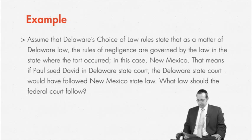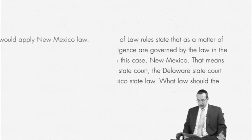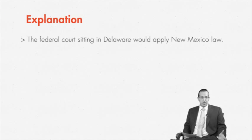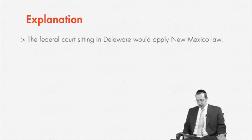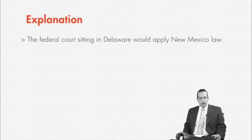By the way, that's fairly common. That means that if Paul sued David in Delaware state court, the Delaware state courts would have followed New Mexico law. So what law should the federal court follow? Should it follow Delaware state law — that is, after all, where we're sitting — or New Mexico state law? On one hand, Erie says that you apply the law of the state that we're in, which would seem to be Delaware law. On the other hand, even Delaware wouldn't have applied Delaware law — Delaware would have applied New Mexico law. So in the interest of consistency, the federal courts should apply New Mexico law. And in fact, that's the standard: the federal courts sitting in Delaware would apply New Mexico law.